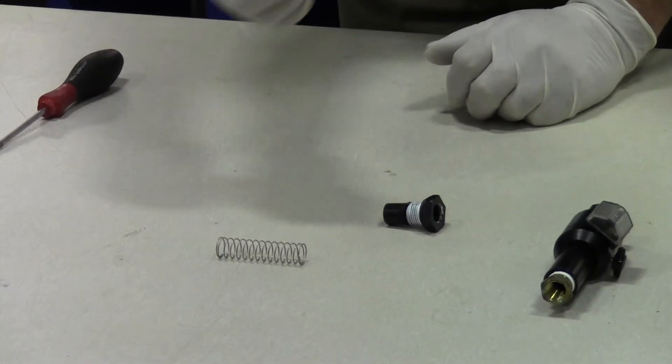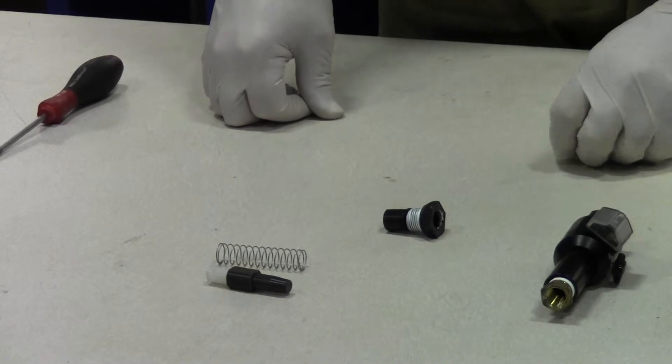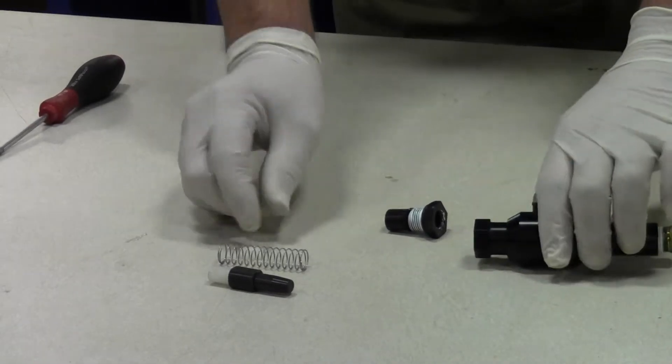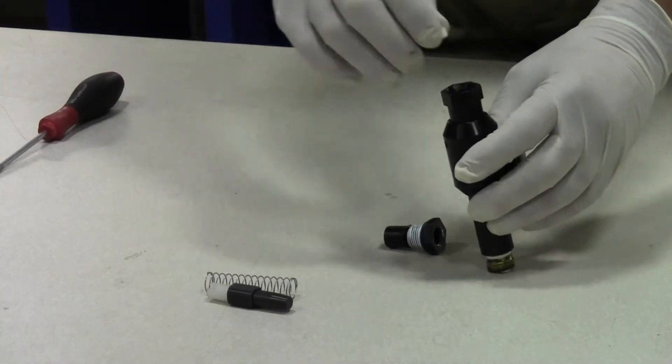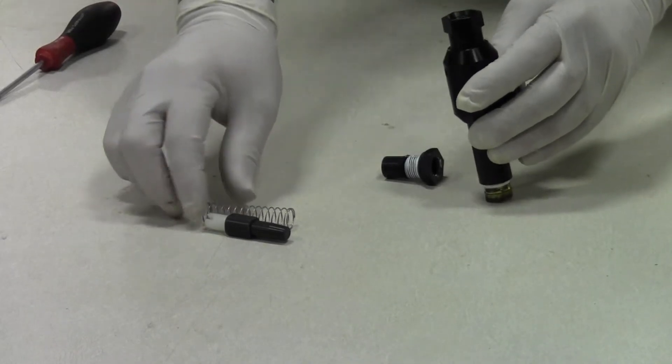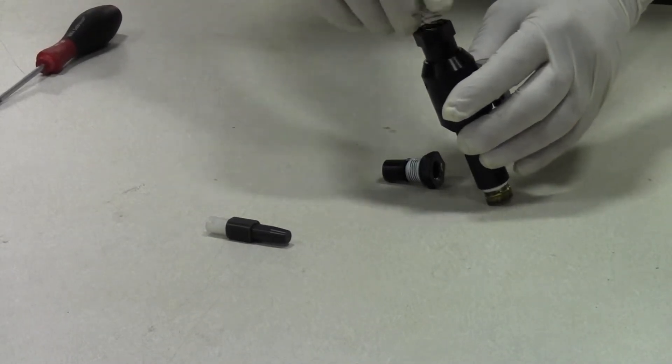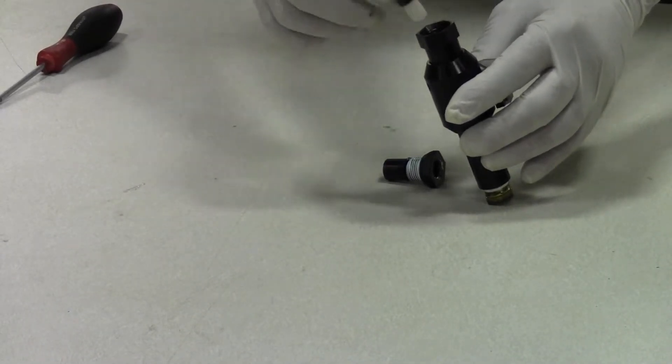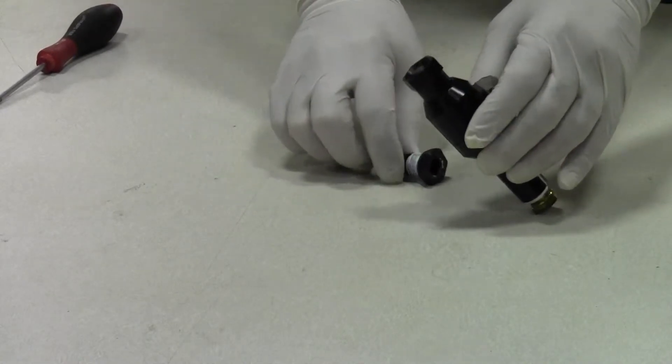Once you have your barrel clean and all your components inspected, reassemble the counter in the reverse order as disassembling. First the spring stop, followed by the spring, and finally the shuttle.